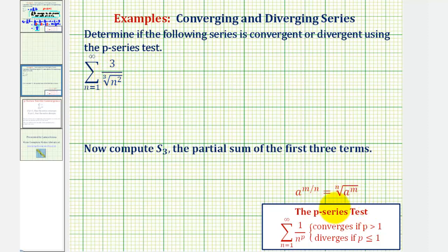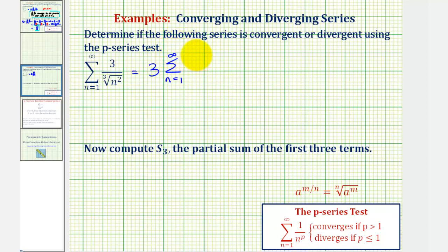To apply the p-series test, we want our series to be in this form here. Once it's in this form, if p is greater than one, then the series converges. And if p is less than or equal to one, then the series diverges. So let's begin by factoring out the three and write this as three times the summation from n equals one to infinity of one divided by n raised to the power of two-thirds, since we want to write the cube root of n squared using a rational exponent.